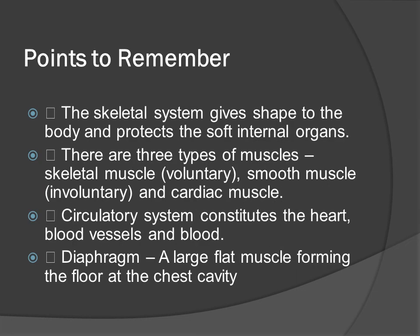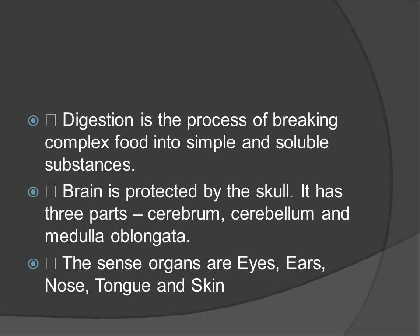Points to remember: The skeletal system gives shape to the body and protects soft internal organs. There are three types of muscles — skeletal muscle (voluntary), smooth muscle (involuntary) and cardiac muscle. The circulatory system constitutes the heart, blood vessels and blood. The diaphragm is a large flat muscle forming the floor of the chest cavity. Digestion is the process of breaking complex food into simple and soluble substances. The brain is protected by the skull and has three parts: cerebrum, cerebellum and medulla oblongata. The five sense organs are eyes, ears, nose, tongue and skin.